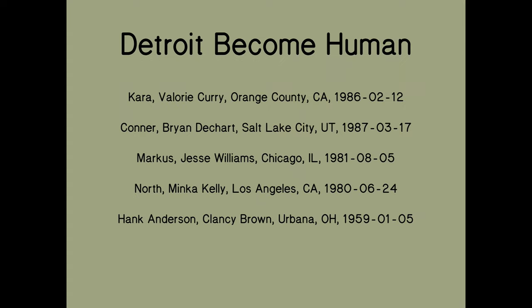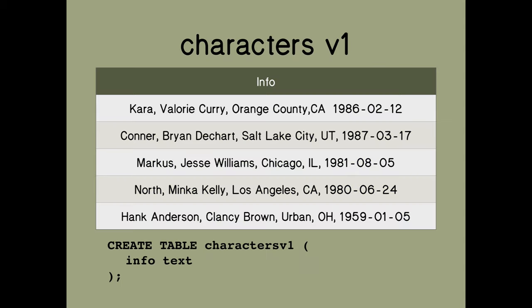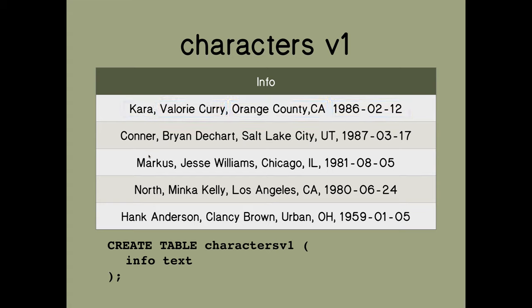So let's go back to the Detroit Become Human example. The rule is: can the data in a column be broken down further into parts? If it can, then it's not atomic. We have that information — Kara, Valerie Curry, Orange County, California — we can divide this information into recognizable parts. So that's not atomic data.